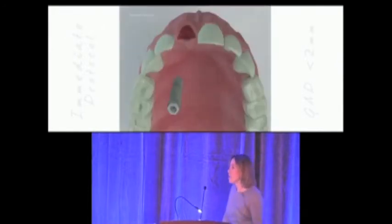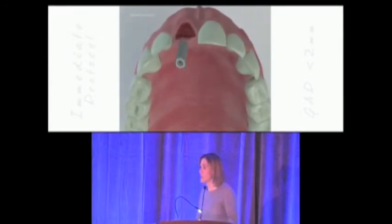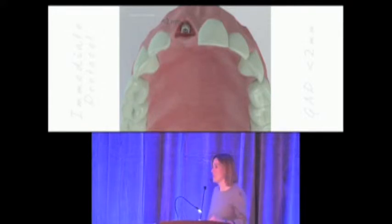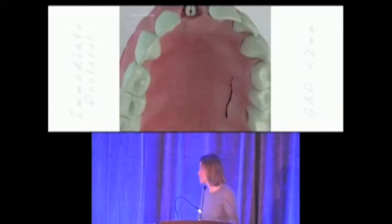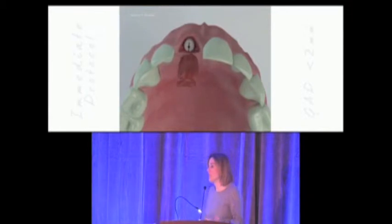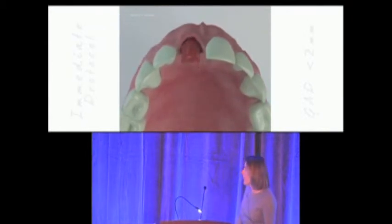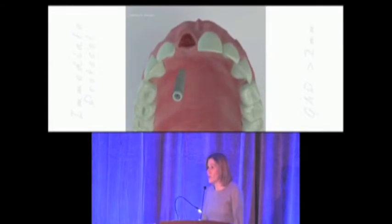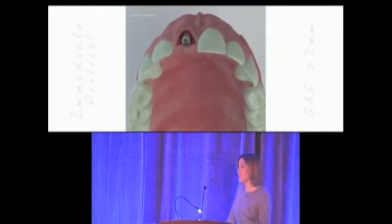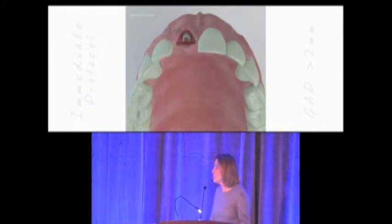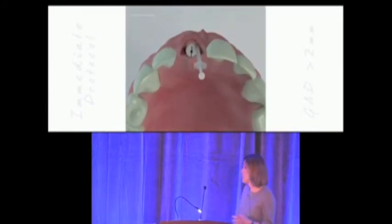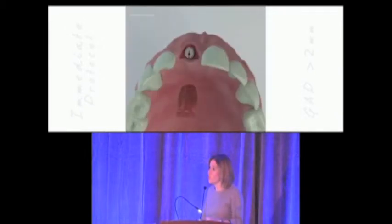If the head of the implant is less than two millimeters from the buccal bone, we fill that gap with just a connective tissue graft. If the implant is more than two millimeters away from the buccal plate, we fill that gap with bone chips obtained from a sterile filter during implant drilling, and afterwards we place a connective tissue graft on top of that bone.